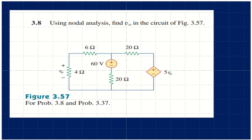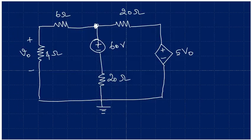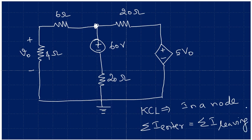When you look into this, we have a voltage source of 60 volts available here, and this is a dependent voltage source 5V0. As it is a nodal analysis, we have to apply Kirchhoff's Current Law. It states that the sum of entering currents at a particular node is equal to the sum of leaving currents.